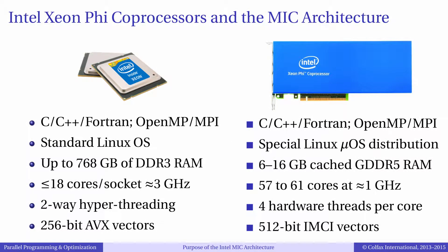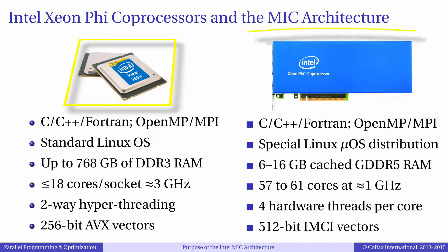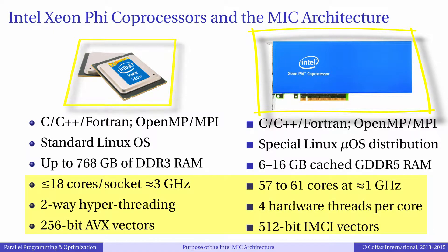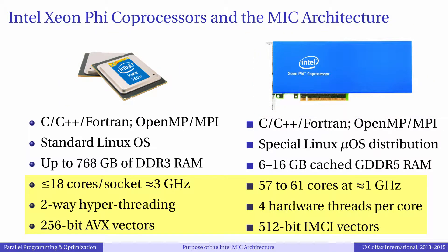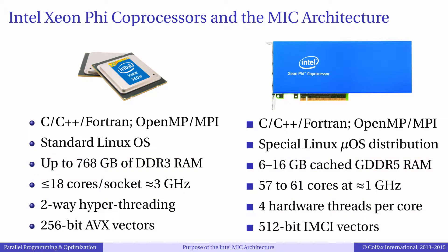What is required to efficiently program for Intel parallel architectures? Both Intel Xeon processors and Intel Xeon Phi processors are parallel vector processors. The optimization areas for them are qualitatively the same – vectorization, thread parallelism, and memory traffic control. However, those requirements are quantitatively most strict for Intel Xeon Phi processors.